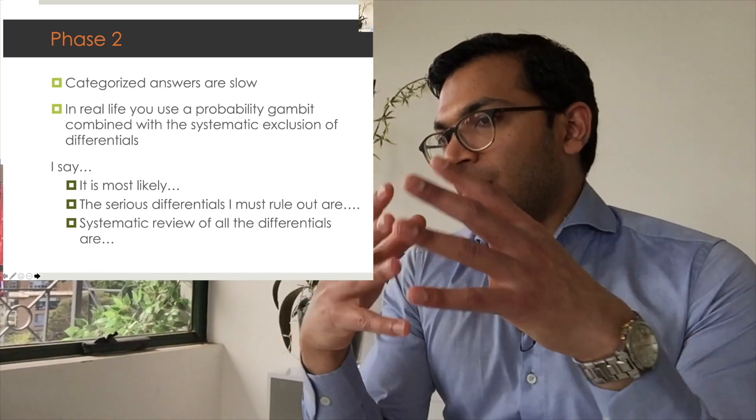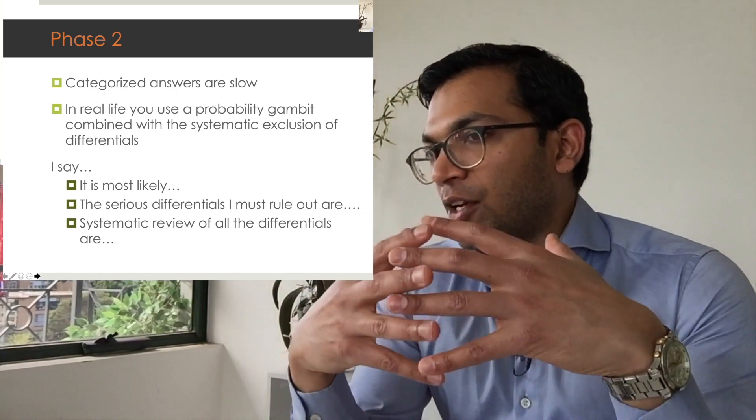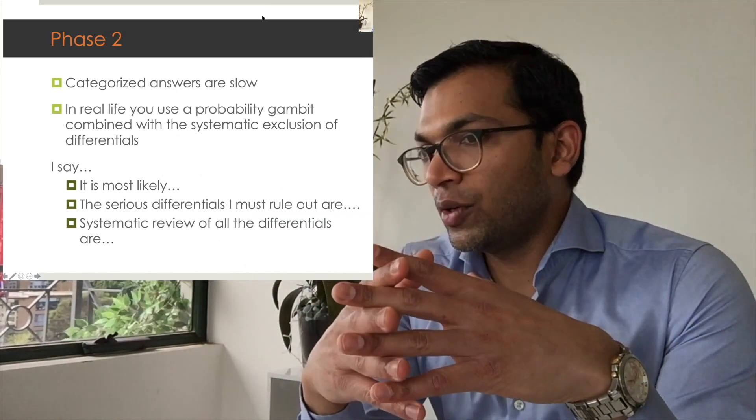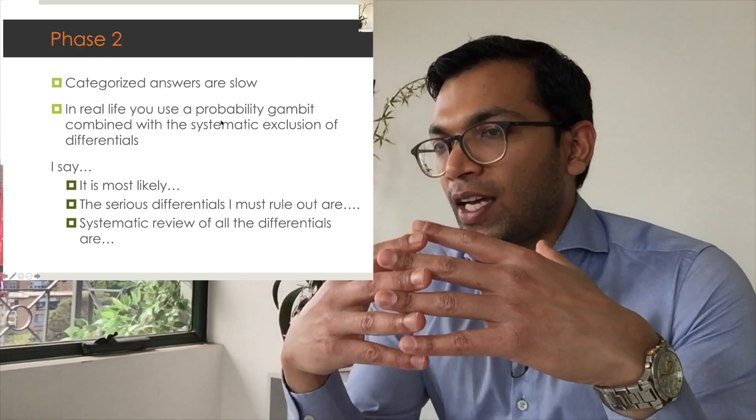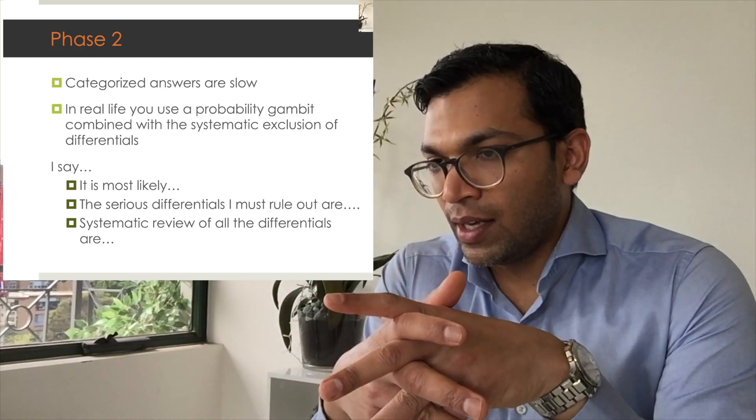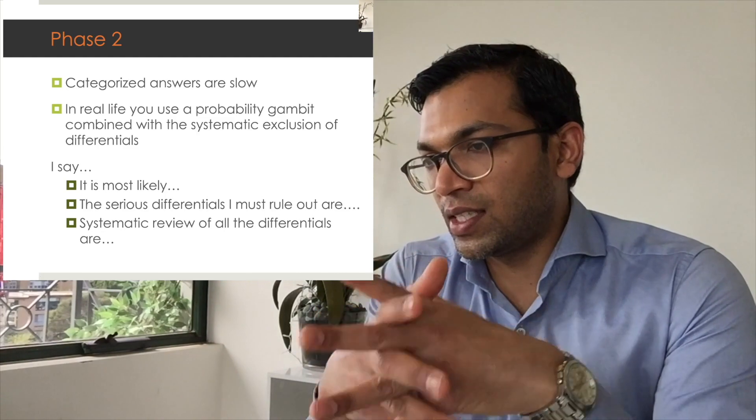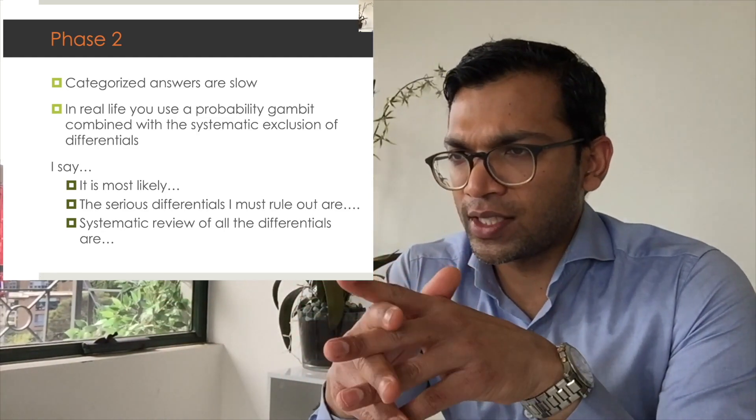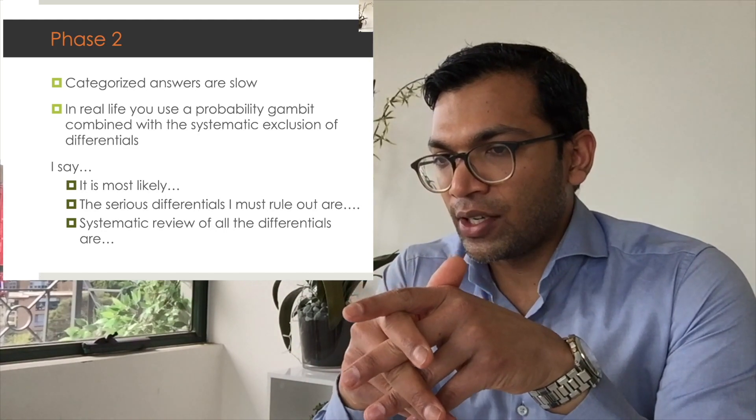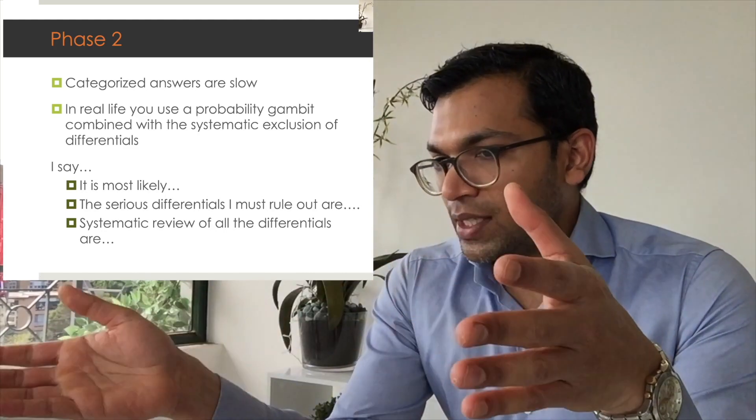What I'd say is that in the first part we talk about systematic categorized answers, but these are slow. And I think in real life, this is an exam of real life, in real life experts use probability gambits, but we can combine that with a systematic exclusion of differentials. This would be borne out in a lot of the crisis management literature out there.